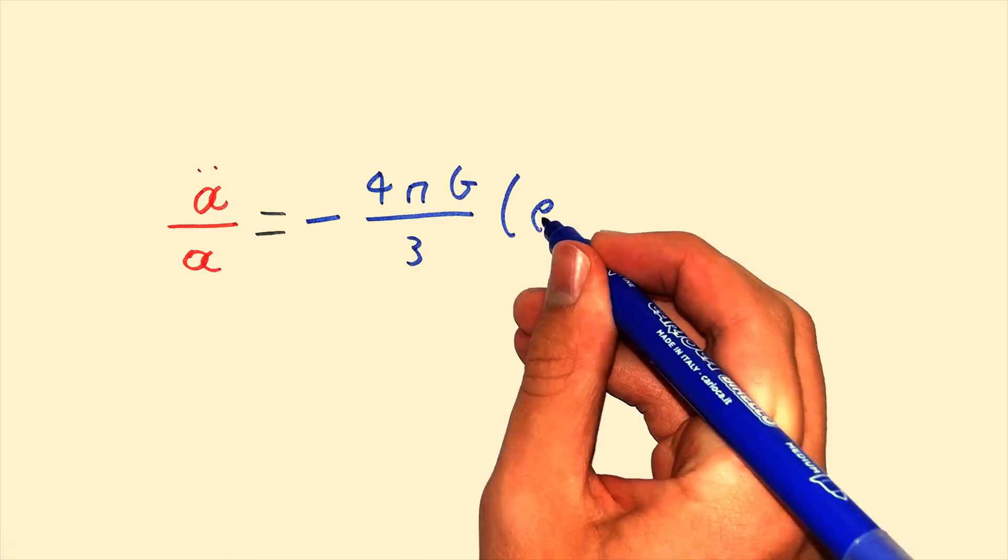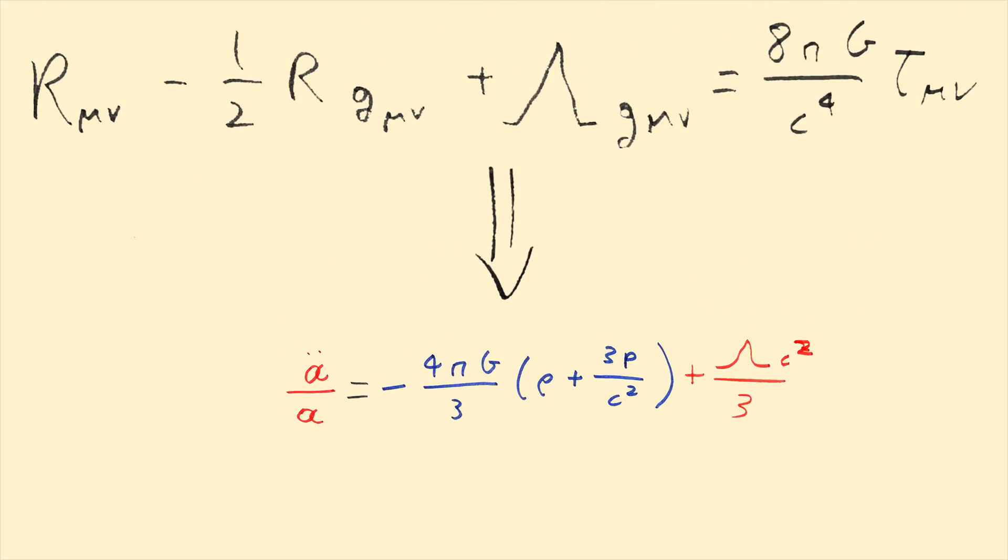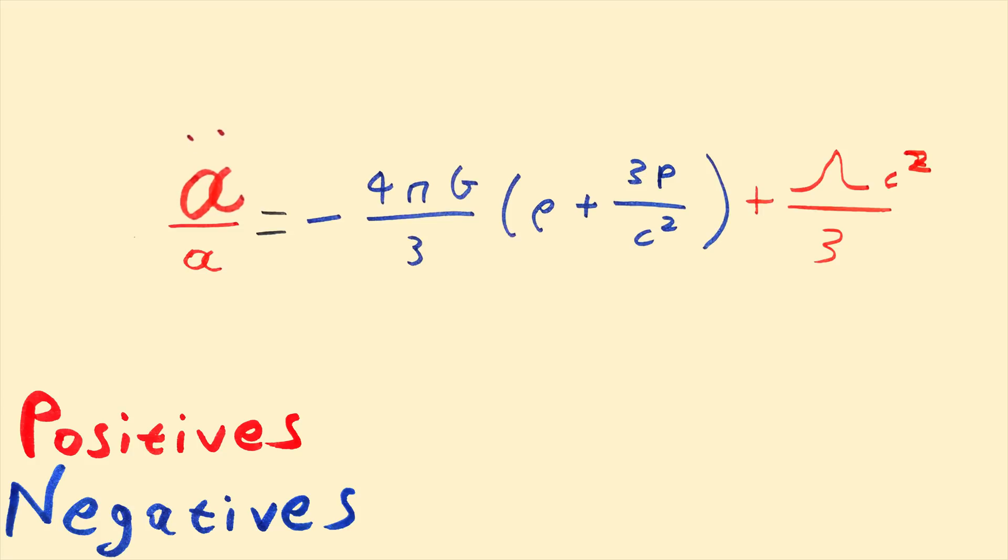According to the second Friedman equation, which is just Einstein's equations solved for the whole universe, because of the cosmological constant, we have a positive acceleration of the scale factor, A double dot. Which means that the universe's expansion rate is increasing.